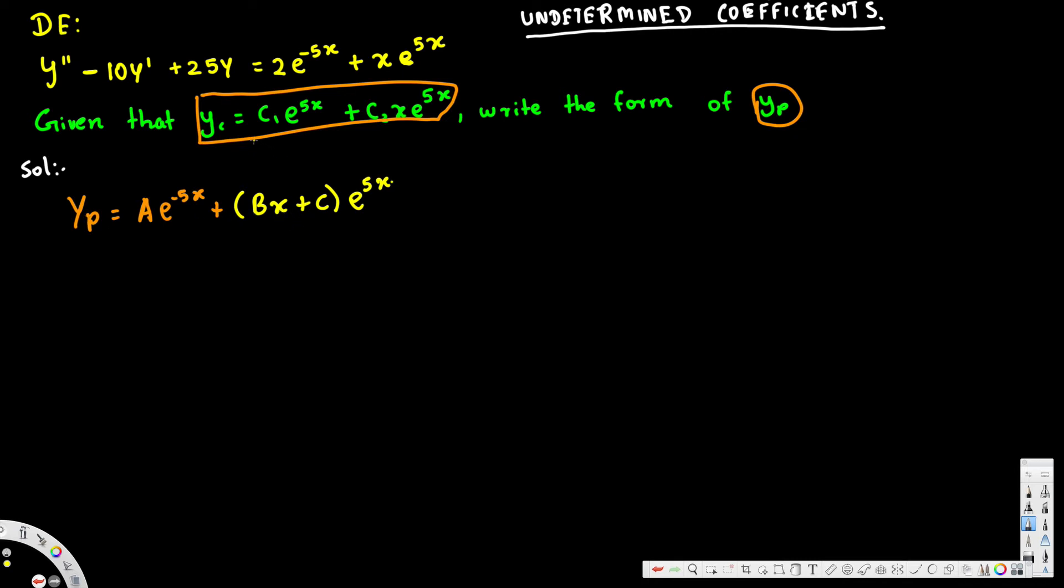If we have something like that, we have to multiply by x each time. If we have one repeat, multiply by x. If we have two repeats, multiply by x^2. If we have three repeats, multiply by x^3 to make this linearly independent.